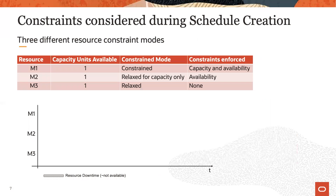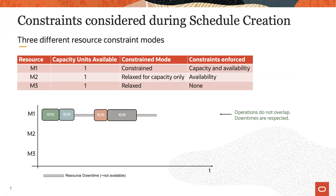This example highlights three different constraint modes. Machine M1 is constrained — both capacity and availability are respected. So when you see the representation in the Gantt chart, operations do not overlap one another and they are not overlapping with downtimes either.